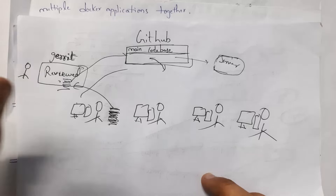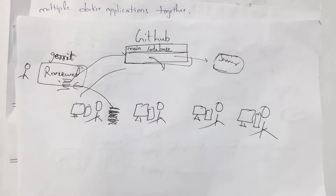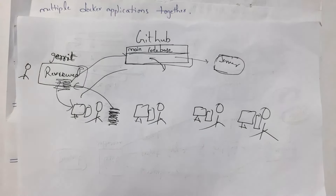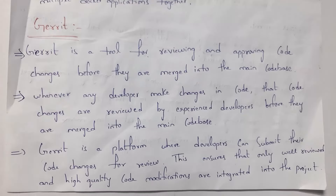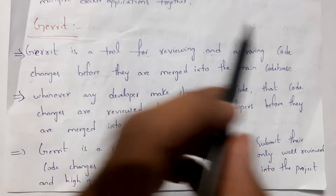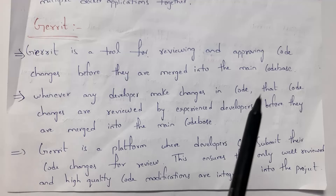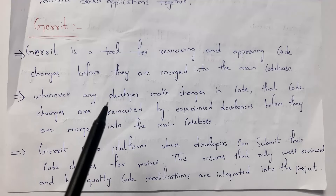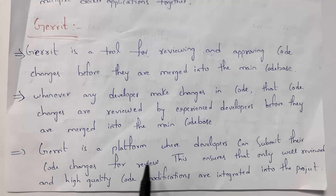In Gerrit software, senior developers will review that code. Only if the code is correct, those changes are reflected into the main codebase present in the GitHub server. So Gerrit is a place where developers submit their code for review. Gerrit is a tool for reviewing and approving code changes before they are merged into the main codebase. This ensures that only well-reviewed and high-quality code modifications are integrated into the project.